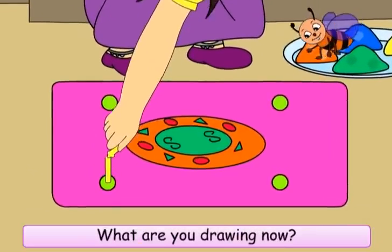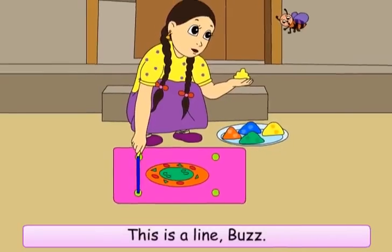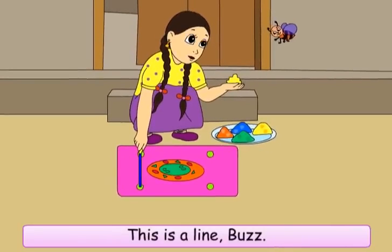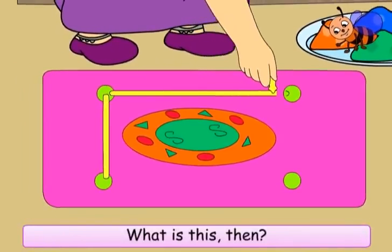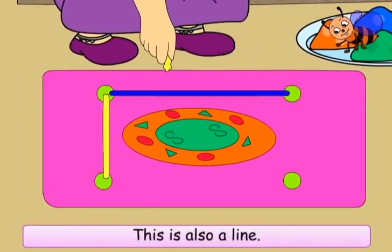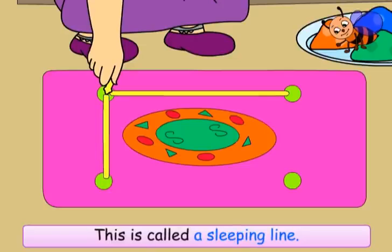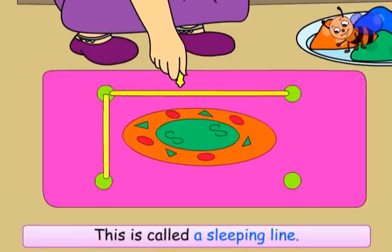Buzz asks: 'What are you drawing now?' Meenu says: 'This is a line.' Then Buzz asks: 'What is this then?' Meenu explains: 'This is also a line. This is called a standing line. This is called a sleeping line.'